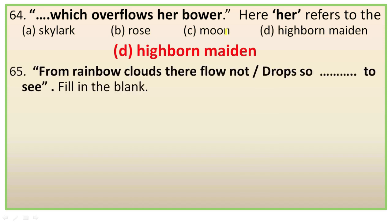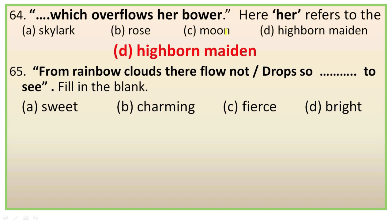Question 65: 'From rainbow clouds there flow not drops so ___ to see' — fill in the blank. Options are sweet, charming, fierce, bright. These two lines are from stanza 7: 'What thou art we know not. What is most like thee? From rainbow clouds there flow not drops so bright to see.' So the right option is D, bright.